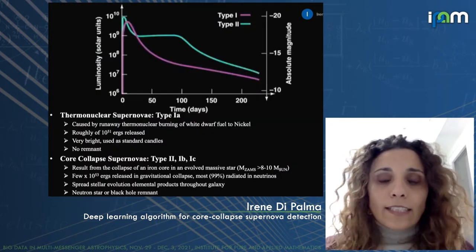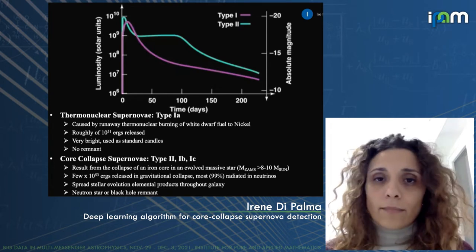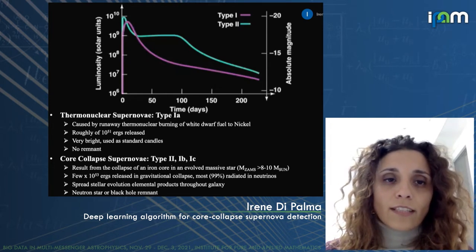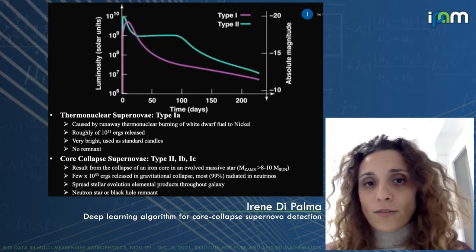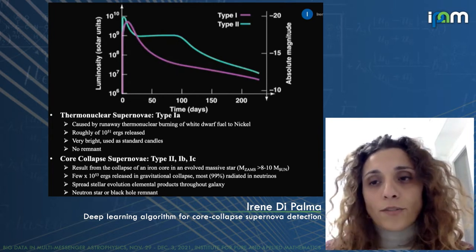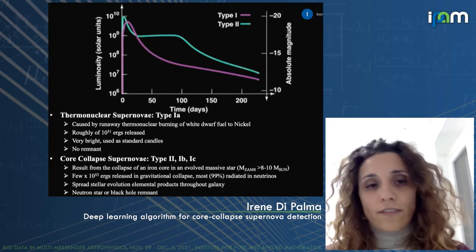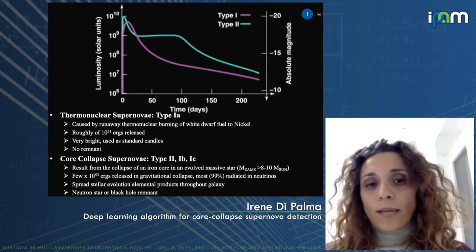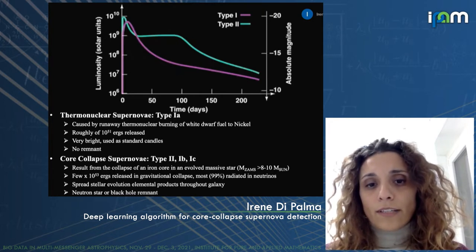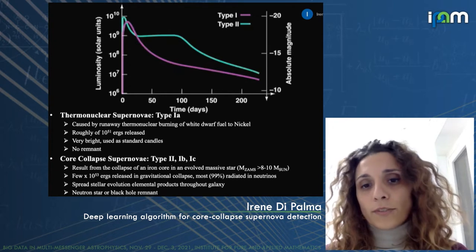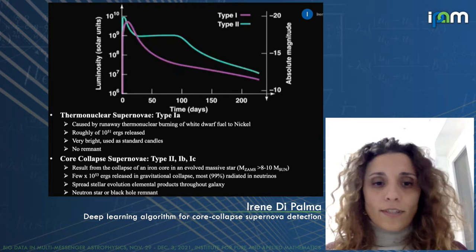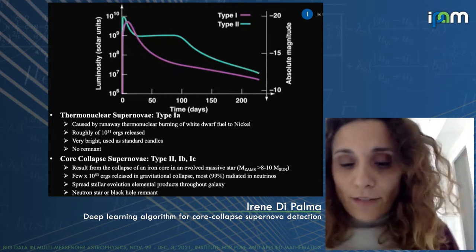If you look at the upper part of this slide, you have luminosity versus distance. There are two different main broad categories of supernova: type 1 and type 2. Type 1 is caused by runaway thermonuclear burning of white dwarf fuel to nickel. They are really bright, and for this reason they are used as standard candles. They don't leave any remnant behind.